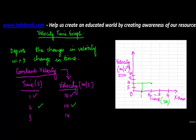At time 3 seconds, velocity is 10, giving point 3. At time 4 seconds, velocity is again 10, giving point 4. As you plot all these points, you will find that this is a line which is parallel to the x-axis. So in the case of constant velocity, the velocity curve is parallel to the x-axis.